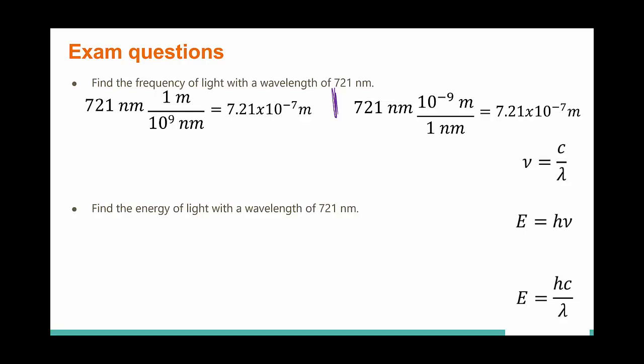If you prefer the method of putting lots of the small thing in the big thing, then you would need to take and put 10 to the ninth nanometers in one meter. However, if you like instead using the way where you just take the value off the table, you're going to remember that the value on the table, which for nanometers is 10 to the negative ninth, always goes to the base unit. But either way, you get 7.21 times 10 to the negative seventh.